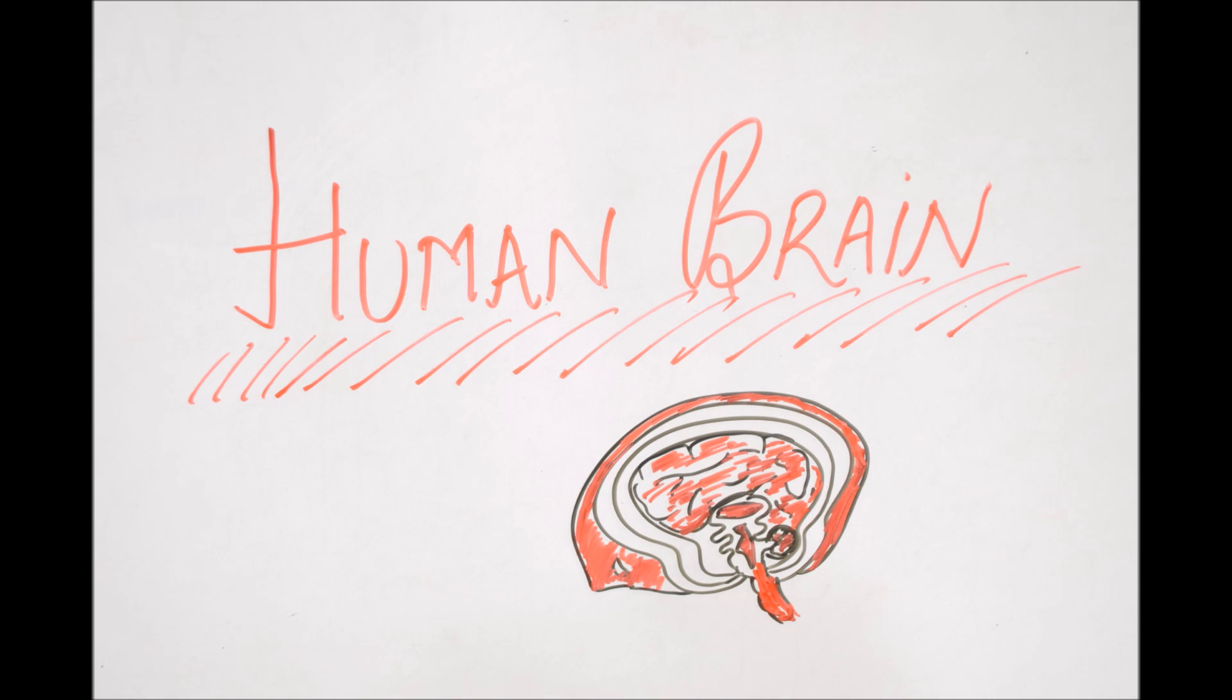Today we will study about the main coordinating center of human body. This is brain. Brain is the main coordinating center of human body. Brain along with the spinal cord form our central nervous system. In this lecture, we will concern about the brain.